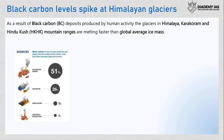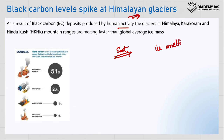The next news is the black carbon level spike seen at Himalayan glaciers. Black carbon is produced by human activity — during the firing of bricklands, soot is released, which is a form of black carbon. When it deposits on ice, the melting rate increases because black is an absorber of heat. When black carbon gets deposited on the ice, temperatures gradually increase and the ice starts melting.